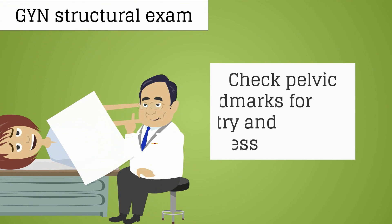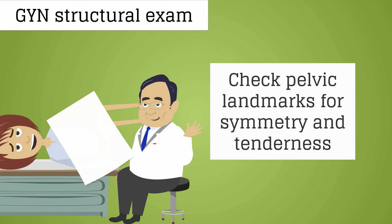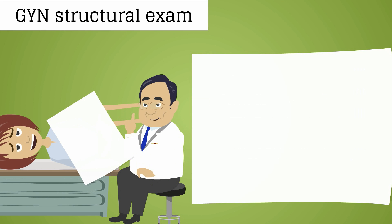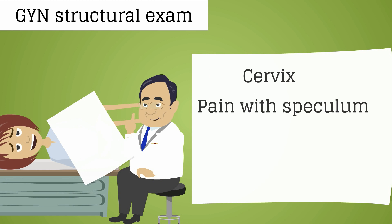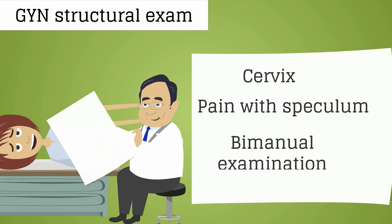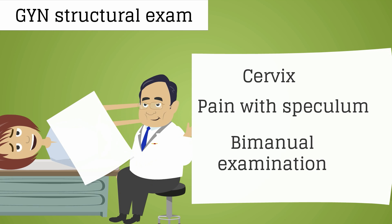For the gynecology structural examination, first check pelvic landmarks for symmetry and tenderness. Assess if the cervix is in the usual position and whether there is pain with insertion of the speculum at the level of the introitus or deeper within. During bimanual examination, assess the uterus midline, any adnexal tension or laxity, uterine tenderness, and tenderness in the muscles and fascia of the pelvic floor.